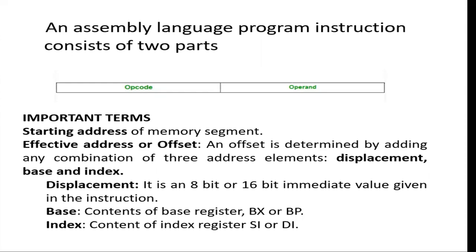When we talk about an instruction, it is basically of two parts: opcode and operand. Opcode tells us what operation we have to perform on the data, and operand tells us on which data we have to perform the operation. Addressing mode tells us the location of our operands — from where the CPU has to fetch the operand and perform the operation on them. There are various modes in which we can get the location of the operand, and those are known as addressing modes.